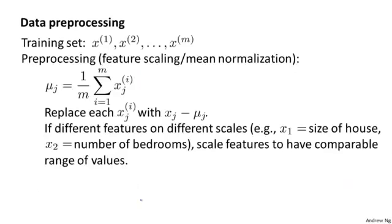Before applying PCA, there's a data pre-processing step which you should always take. Given a training set of m unlabeled examples, it's important to always perform mean normalization, and then depending on your data, maybe perform feature scaling as well. This is very similar to the mean normalization and feature scaling process we had for supervised learning — it's actually exactly the same procedure, except we're doing it now to our unlabeled data, x1 through xm.